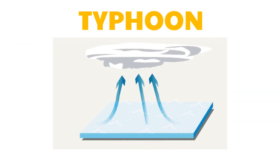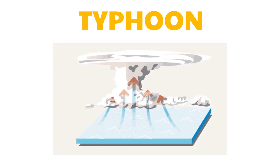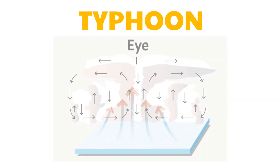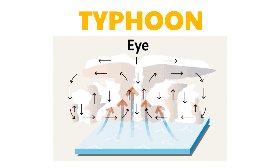Typhoons start off as tropical thunderstorms. The strong winds pull in moisture from the ocean. The thunderstorms convert the moisture into heat. The heat causes more air to flow to the center of the storm, causing evaporation of water. All the heat and air flow towards the eye, creating a typhoon.